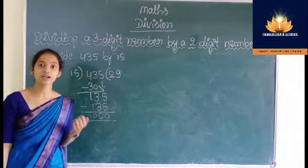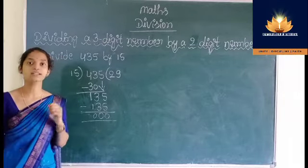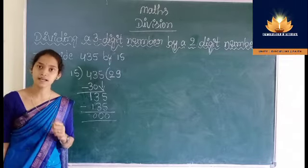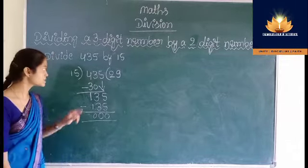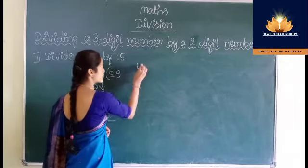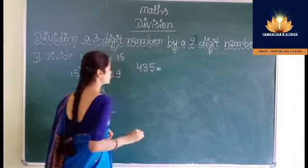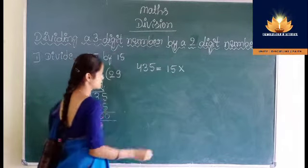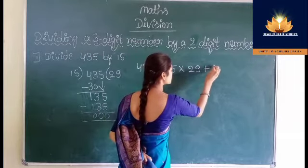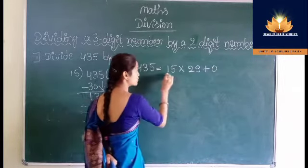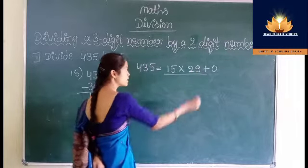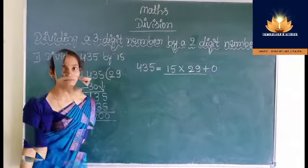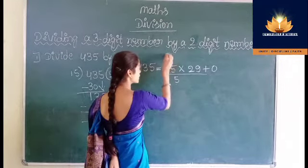We can check our division: dividend = divisor × quotient + remainder. Here the dividend is 435, divisor is 15, quotient is 29, and remainder is 0. Multiply 15 by 29: 9 fives are 45 — write 5 and carry 4. 9 ones are 9, plus 4 is 13. 2 fives are 10 — write 0, carry 1. 2 ones are 2, plus 1 is 3.